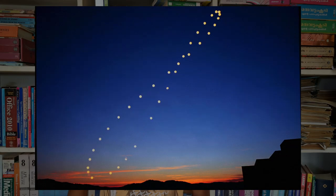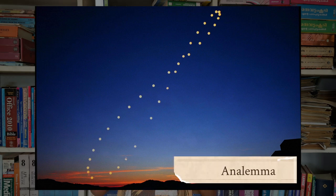Imagine that you fix a camera at one position and take a photograph of the sun every day for one year, at the same time — let's say at 8 o'clock. You'll have a lot of photos. But what if you combine all of them together? You'll get this. Such a photograph is known as an analemma.